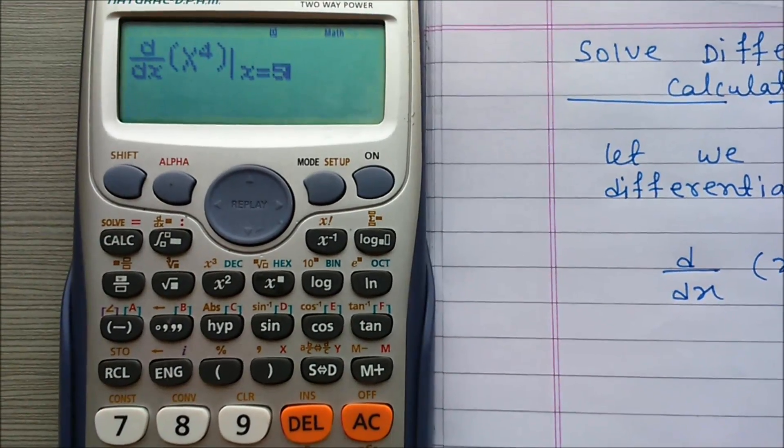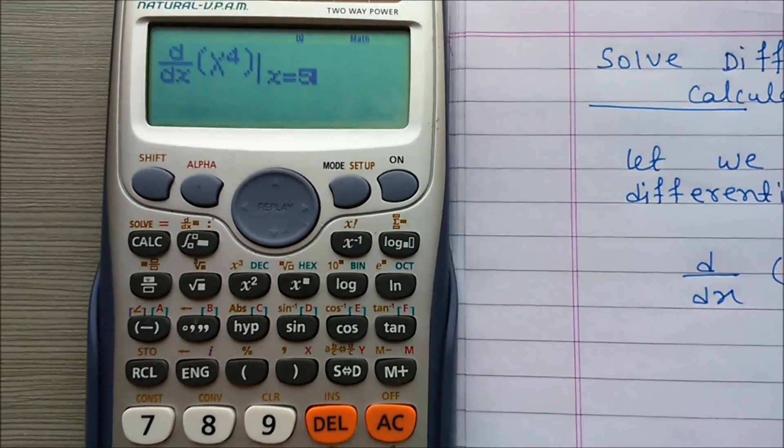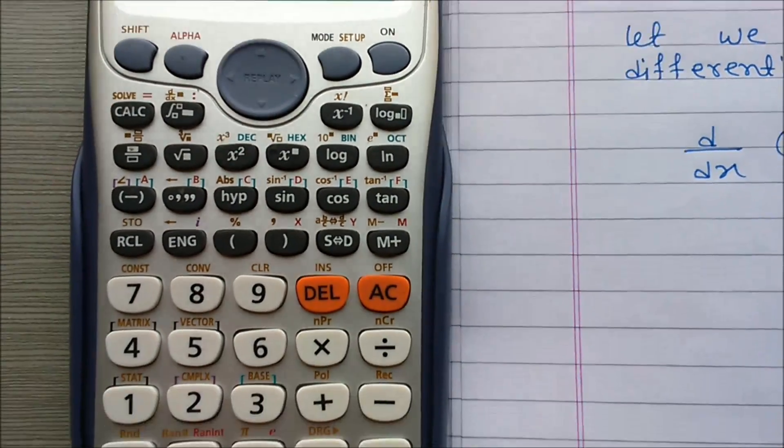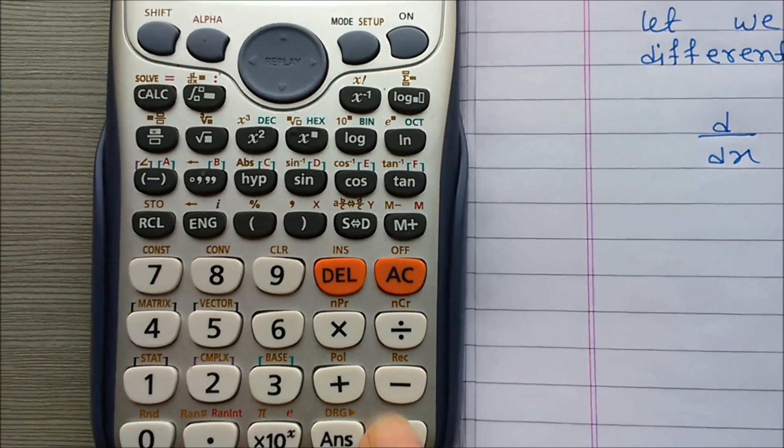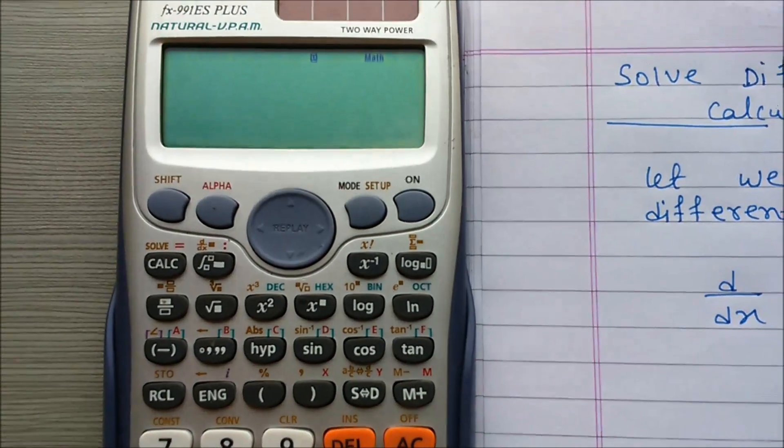d by dx x to the power 4 and where x equal to 5. Now for differentiation, when you press equal to, then calculator is calculating.